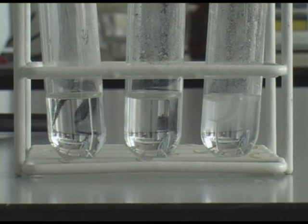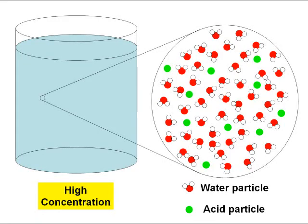We can explain this using the same ideas about particles that we discussed earlier. In the case of high concentration, we have more acid particles in a given volume of water. This means there will be more frequent collisions between acid particles and magnesium particles, and the reaction will be faster.